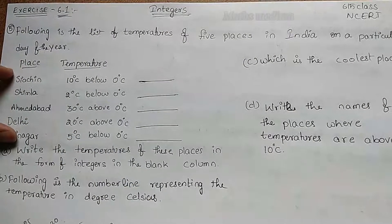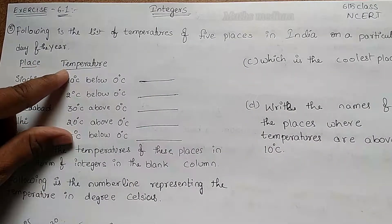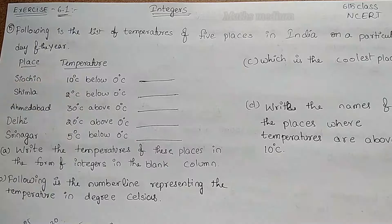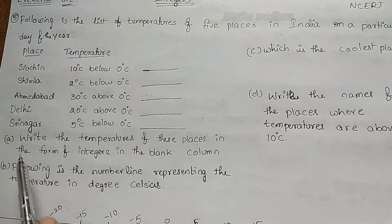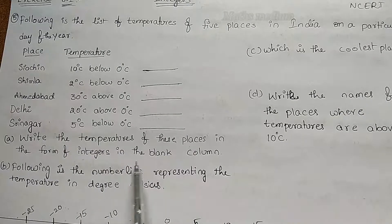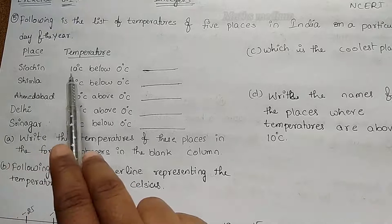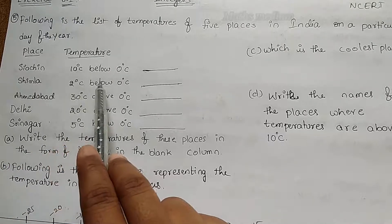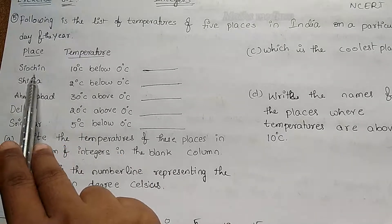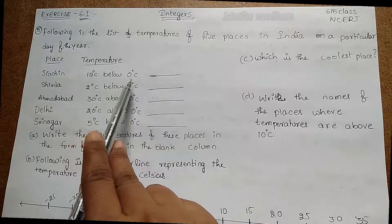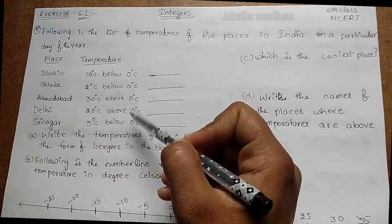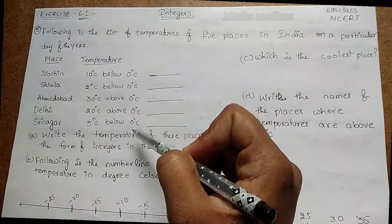So these are the given places and these are the temperatures on that day. The question asks: write the temperatures of these places in the form of integers in the blank column. So here are the places and their temperatures. This is Siachen — 10 degrees Celsius below 0 degrees Celsius.